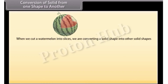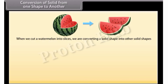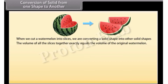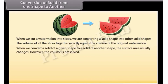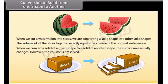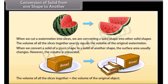When we cut a watermelon into slices, we are converting a solid shape into other solid shapes. Regardless of the size and shape of the slices, the volume of all the slices together exactly equals the volume of the original watermelon. When we convert a solid of a given shape to a solid of another shape, the surface area usually changes; however, the volume is preserved. Similarly, when cutting bread into slices, the volume of all slices equals the volume of the original object.